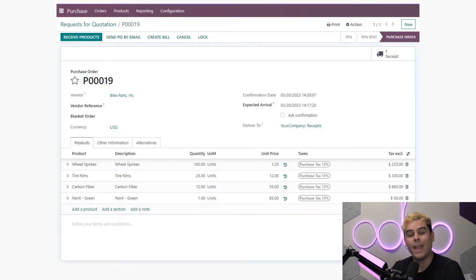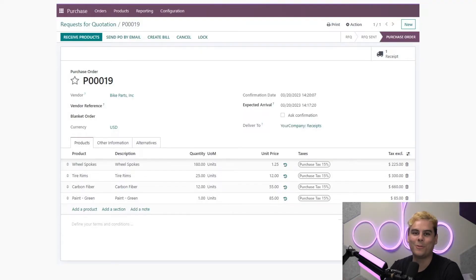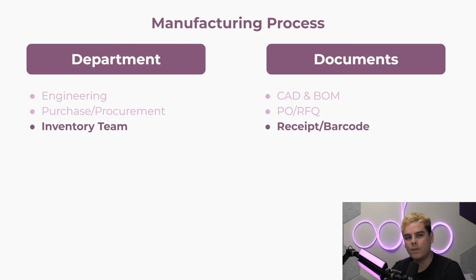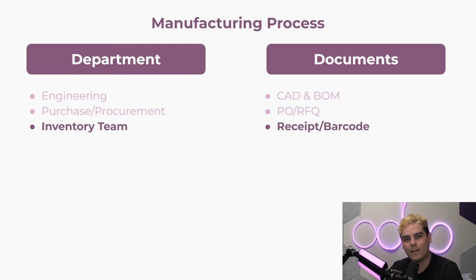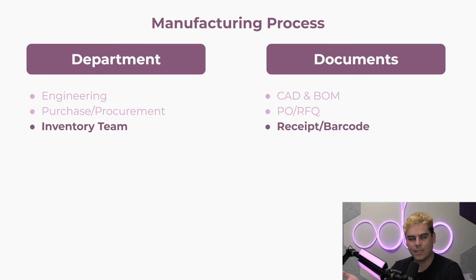Once items have arrived at the facility, they'll be received by the inventory team. Good inventory management is critical for manufacturing. Operations begin at reception, where different routes are available for the product, such as receiving quality checks to make sure everything is up to par, and specifying storage locations across one or multiple warehouses.